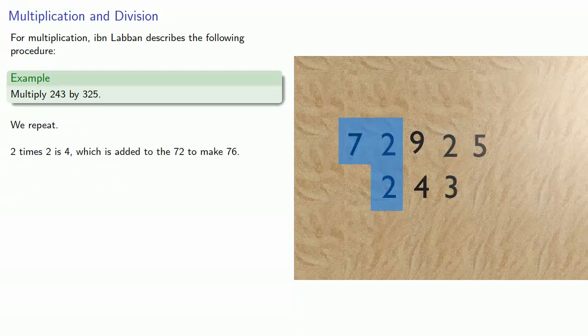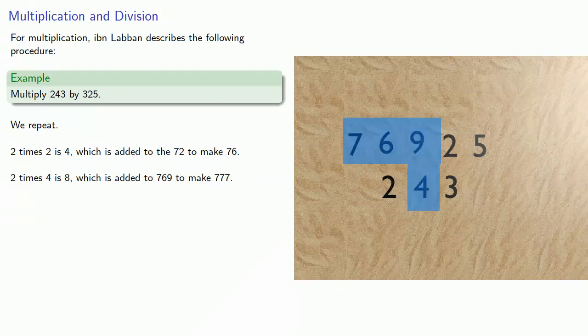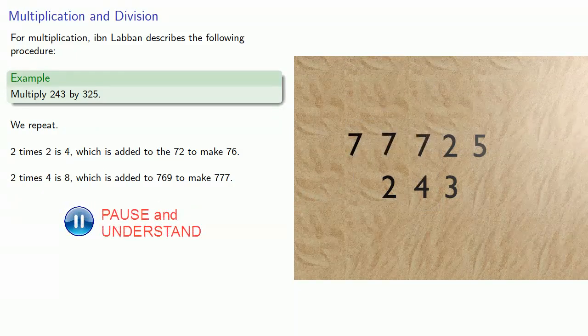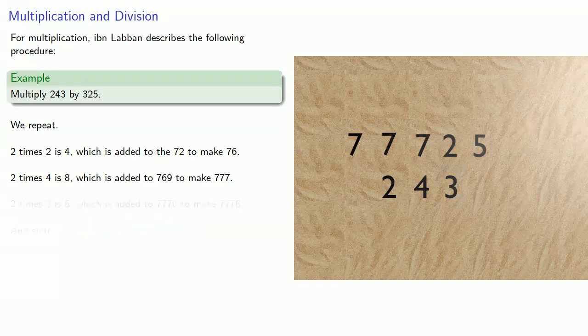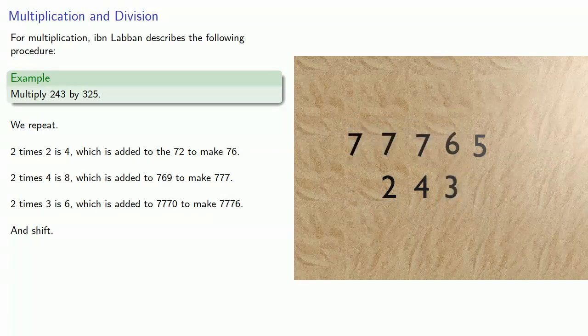2 times 2 is 4, which is added to the 72 to make 76. 2 times 4 is 8, which is added to 769 to make 777. 2 times 3 is 6, which is added to 7770. Remember that 2 is part of our factor and not the product to make 7776.